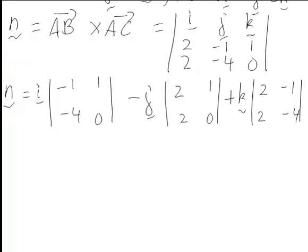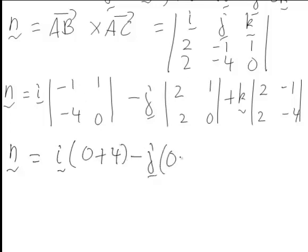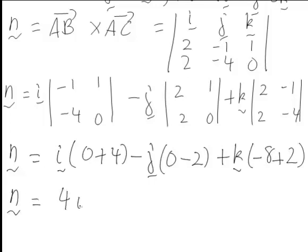And that hence works out to be N equals i times 0 plus 4, minus j times 0 minus 2, plus k times negative 8 plus 2. Hence in this case the normal vector becomes 4i plus 2j minus 6k.